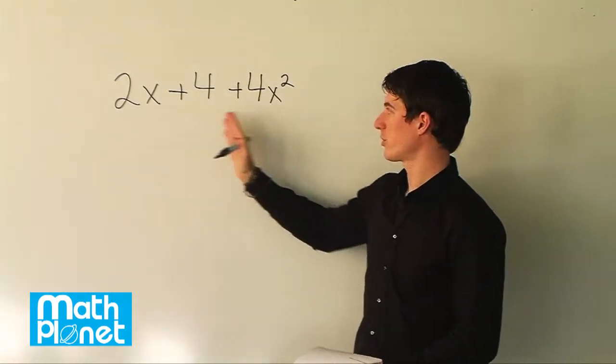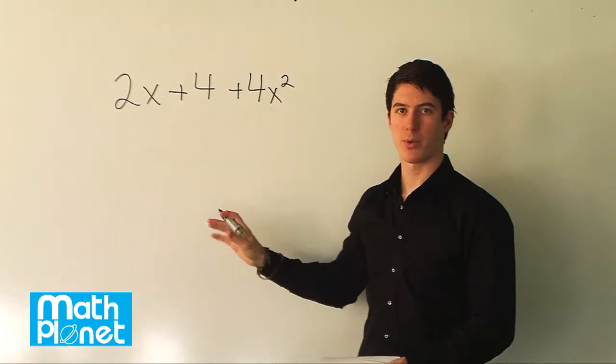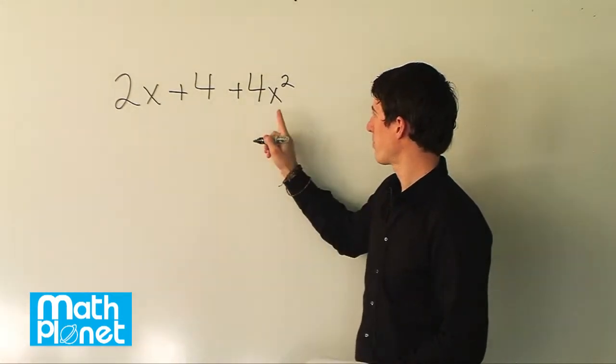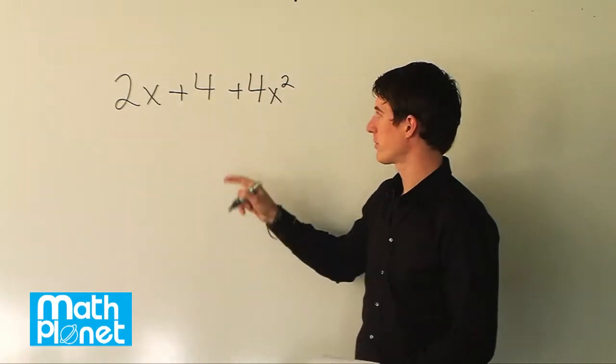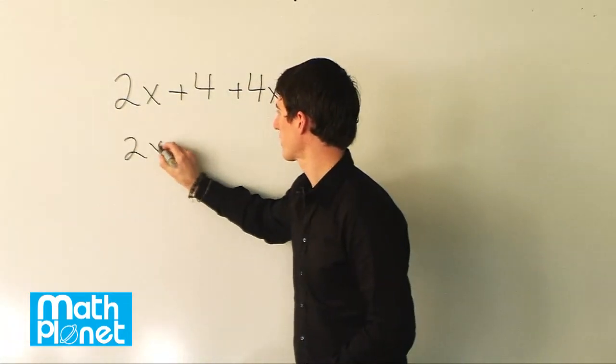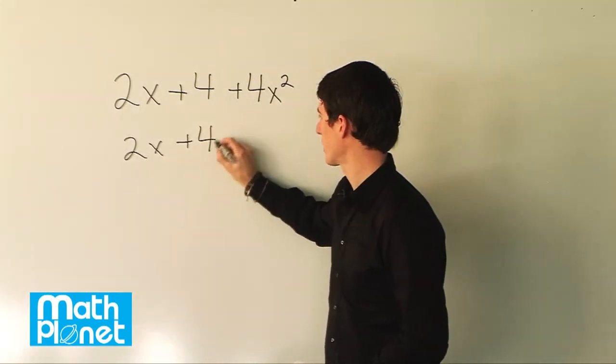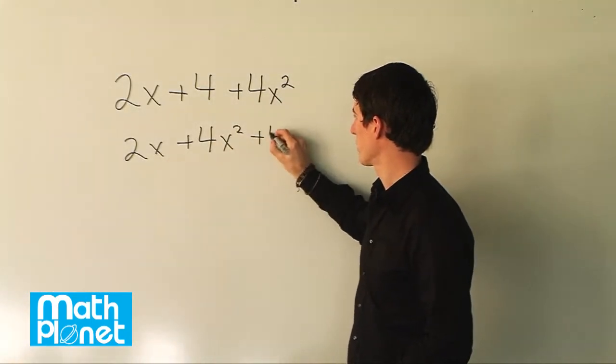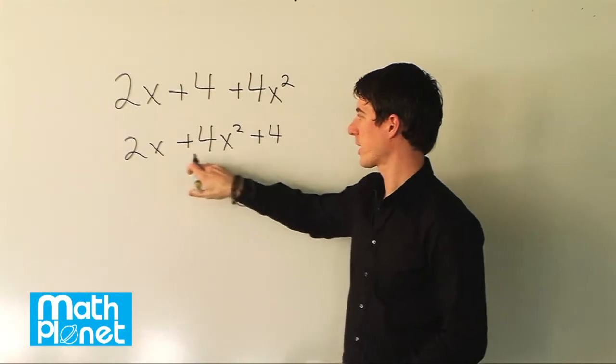What we want to do is look at which terms are similar and see how we want to factorize. I think it's best to put the x terms near each other and then we can factor out an x from there. So if we rewrite this as 2x plus 4x squared plus 4, then we can see we can factor out an x from both of these terms.